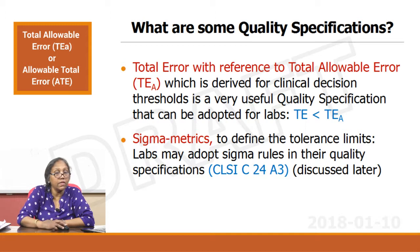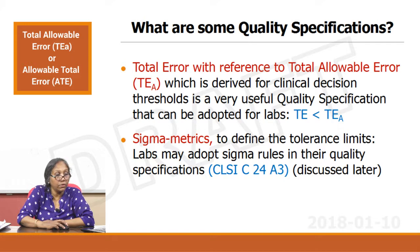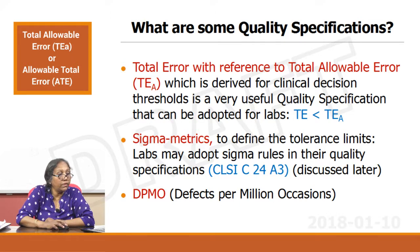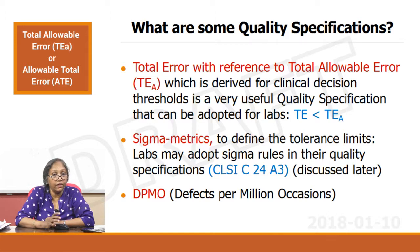Other mechanisms are setting a sigma matrix to define the tolerance limits. Labs may adopt sigma rules in their quality specifications — this is part of the CLSI recommendations, which we will discuss later. Another mechanism is DPMO, defects per million operations. But in this video we will just talk about the total error with reference to the total allowable error specifications.